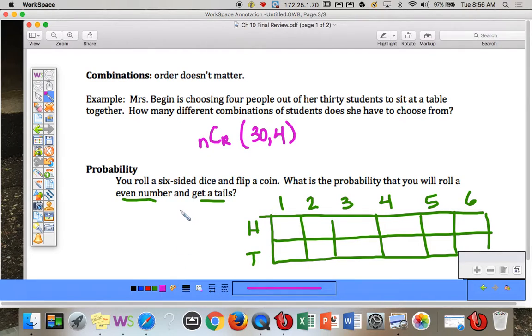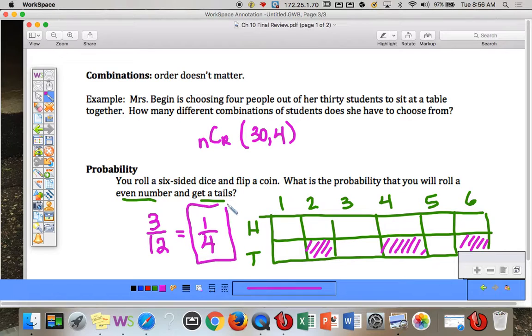So I'm just going to color in the even number and tails. So here's even number tails. Here's even number tails. Here's even number tails. So it looks like three out of six times two is 12. So there's a one-fourth chance, 25% chance, you would get an even number and a tails.